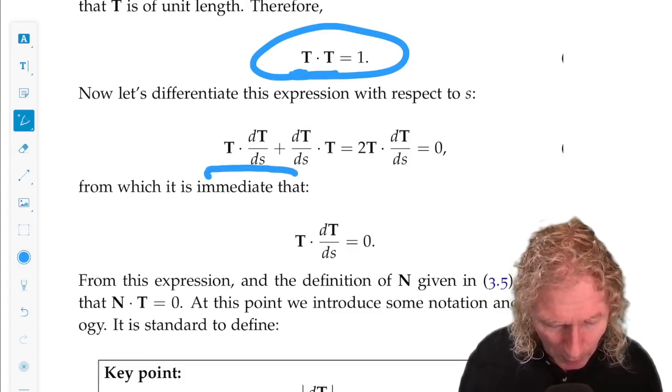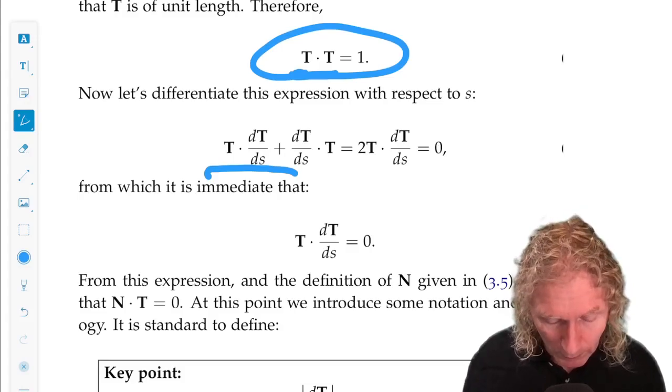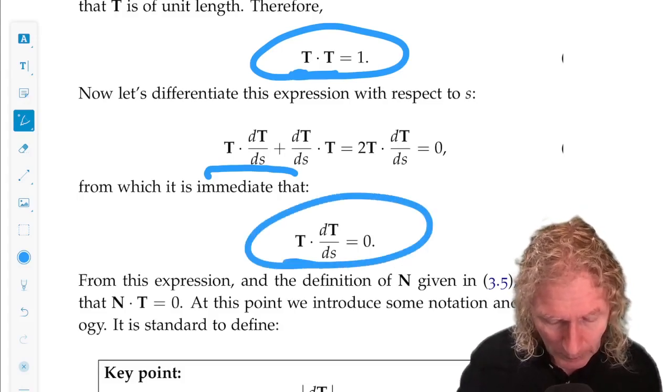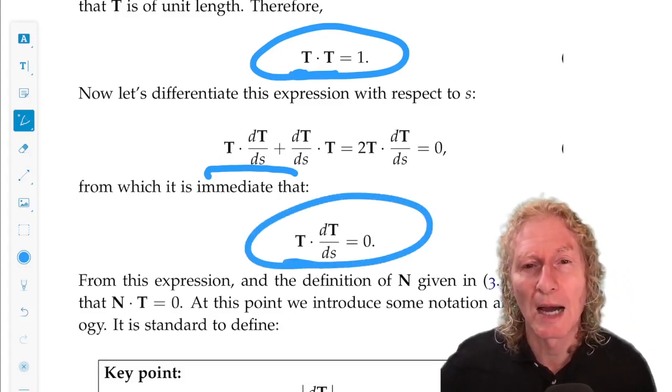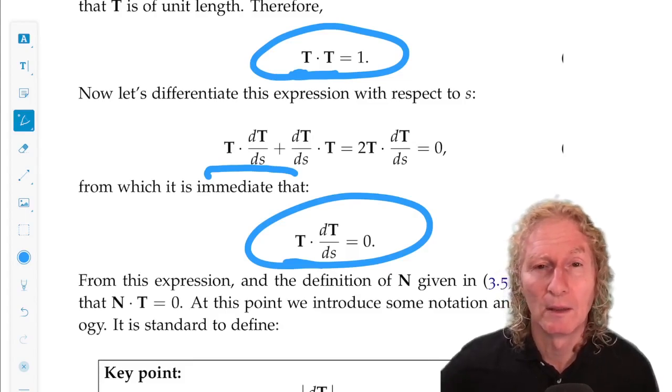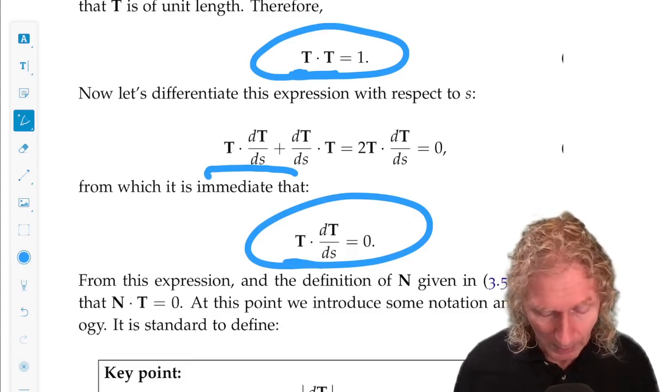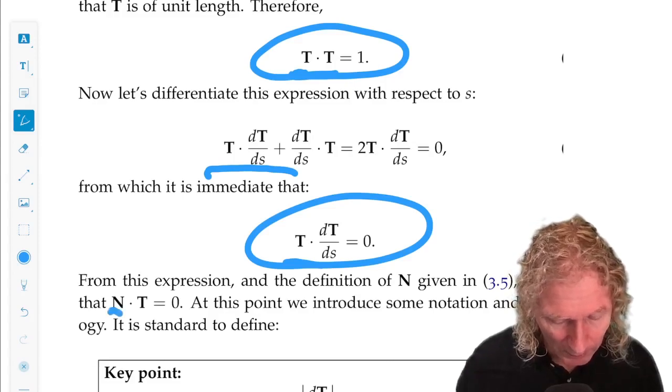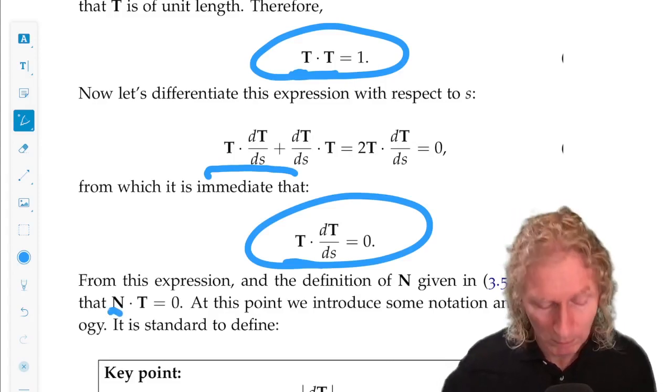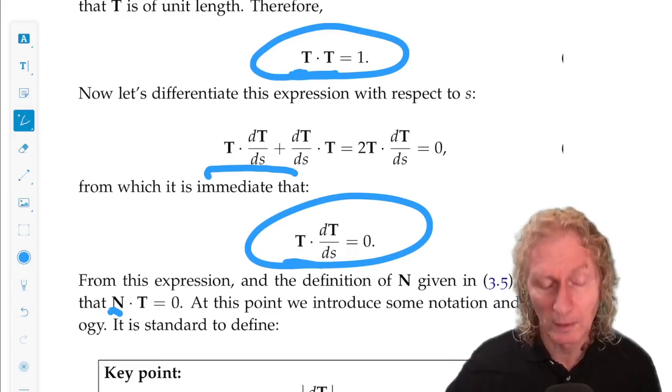So from the definition of T, we can see from this immediately, remember that dot products are commutative, we see that T dot dT/ds is 0. And therefore from the definition of N as dT/ds over its magnitude, we see that N dot T is 0.